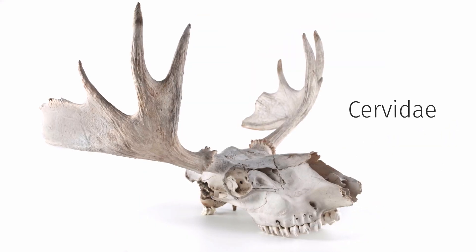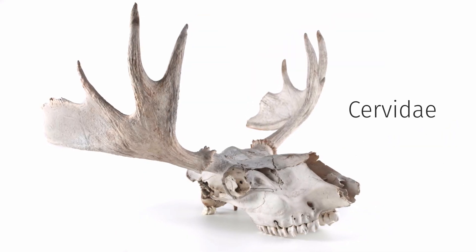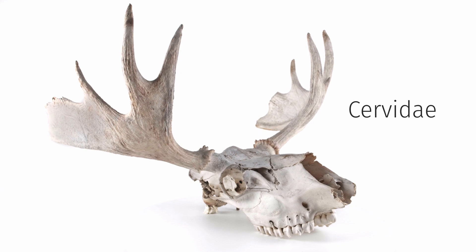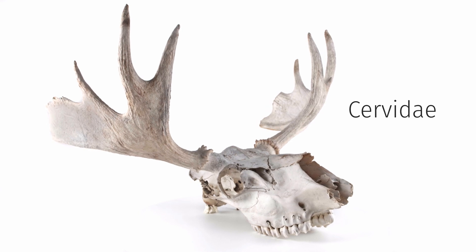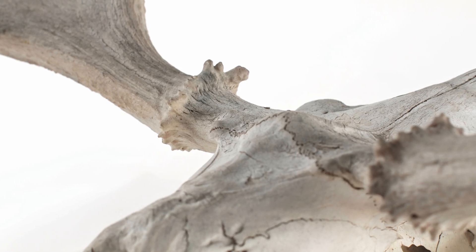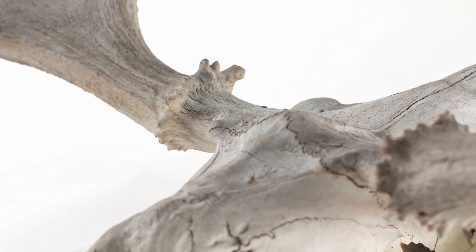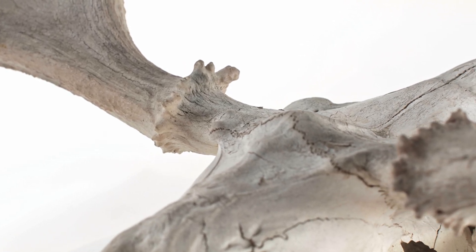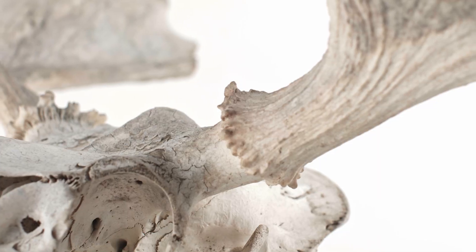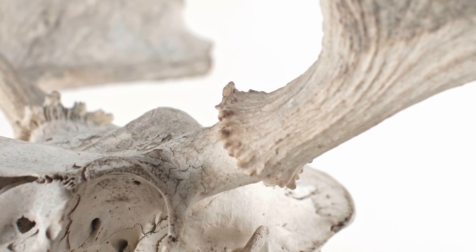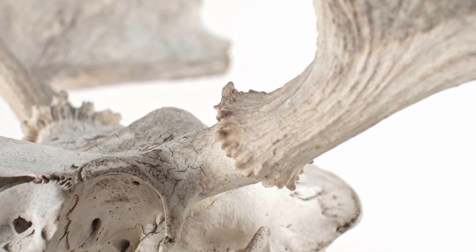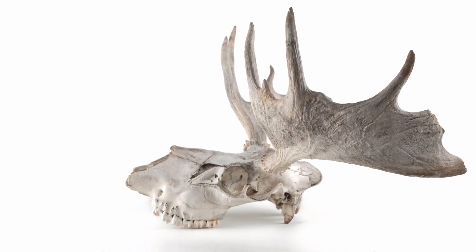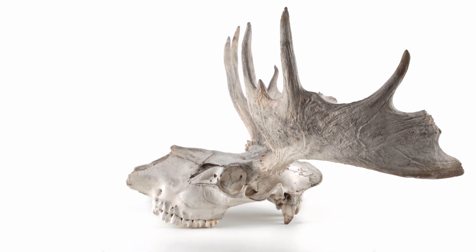Cervidae, or cervids, have antlers, which are porous, fast-growing bony tissue that is shed and replaced annually. They grow from a permanent outgrowth of frontal bone. Examples are moose, elk, caribou, and deer.